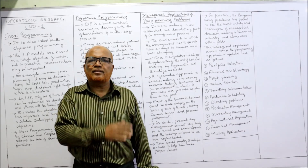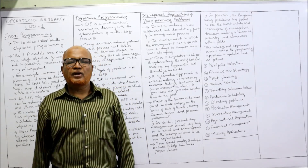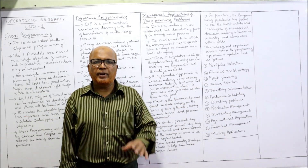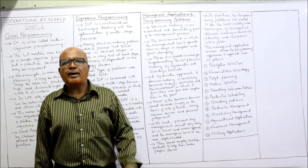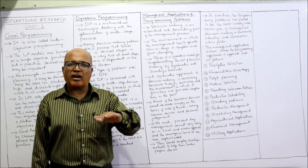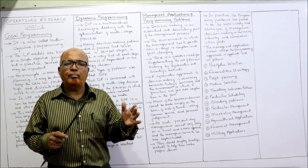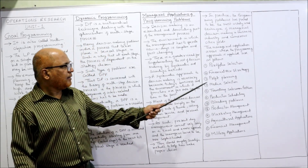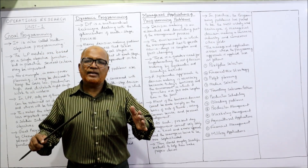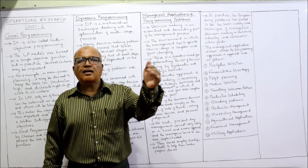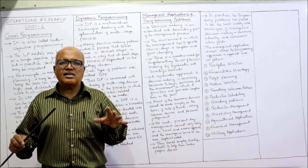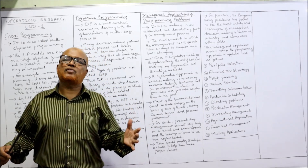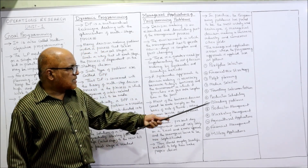Next is media selection. In marketing, many alternatives are available for advertising — television, internet, hoardings, newspapers, magazines, and more. Management has to select which media will increase sales and revenue. Programming problems are very helpful in selecting the right media. Another application is the travelling salesman problem, where we must find the shortest or easiest route for a salesman travelling to different cities and returning home. Programming problems are useful in solving this as well.